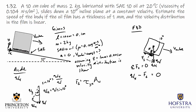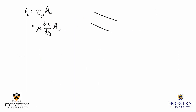To determine the velocity gradient, I blow up the region underneath the cube. I have the bottom face of the cube and the slanted wall surface. The no-slip boundary condition tells me the fluid velocity must match the surface velocity. At the inclined wall, velocity is zero; at the cube face, velocity equals V cube. Since the distribution is linear, I connect these with a straight line.